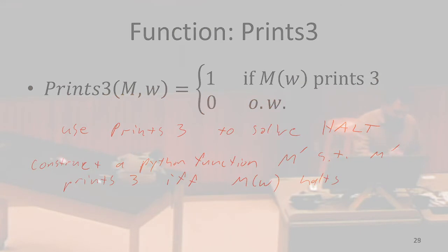So basically what we're going to do is we're going to define M prime on some input X that we're never going to give it, but it could take it if we wanted it to, because we're never going to actually run this function M prime. And what we're going to do is we're first going to say Y is equal to M on W, and we're going to just go ahead and assume that our universal Turing machine doesn't print 3.